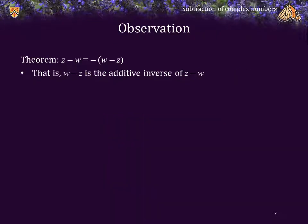Now let's make a few observations. Theorem: z minus w is the additive inverse of w minus z. Well, the proof is easy enough. All we have to do is add the two differences together. And from our definition, those differences are equal to z plus the additive inverse of w plus w plus negative z.